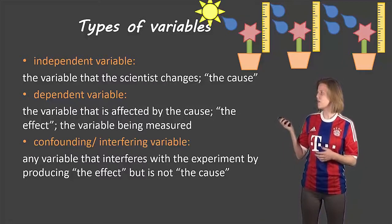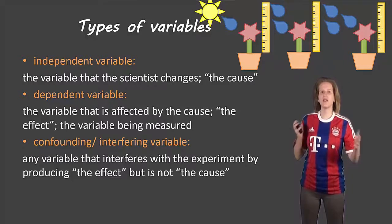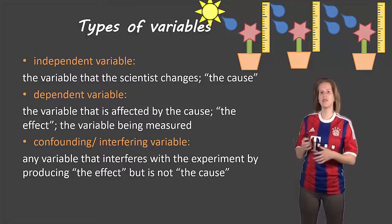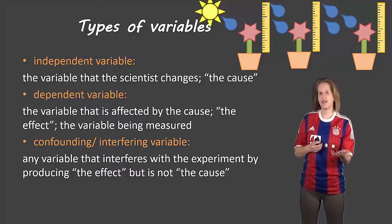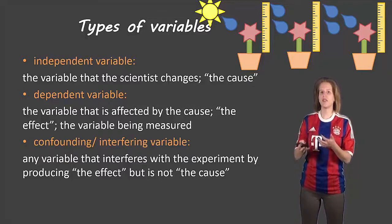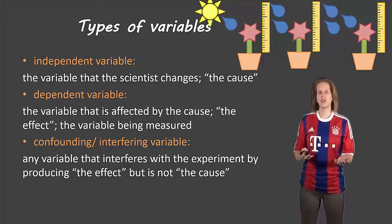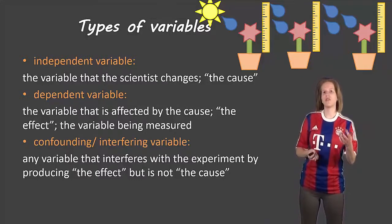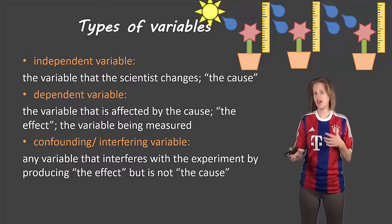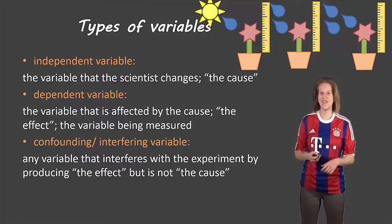So in this case maybe there's some sun there and it's closer to one plant than the others. So not only is that one plant getting a certain amount of water but it's also getting a certain amount of light and that's different than the amount of light and amount of water of the other plants. So at the end of our experiment we couldn't say well it was the water that had the effect or the sun that had the effect because we don't know which one made that effect.